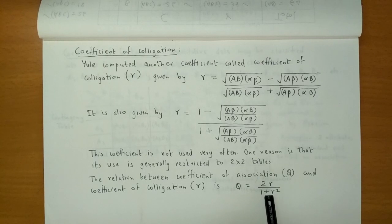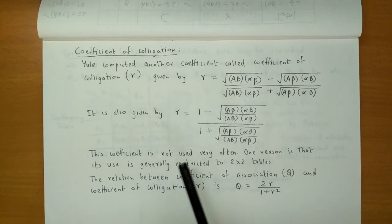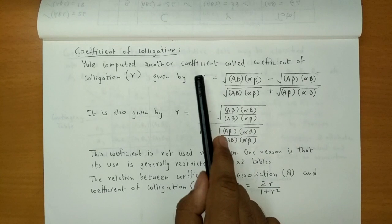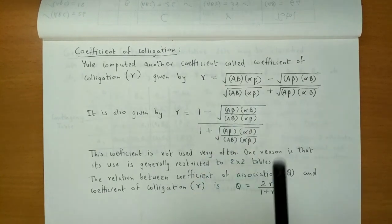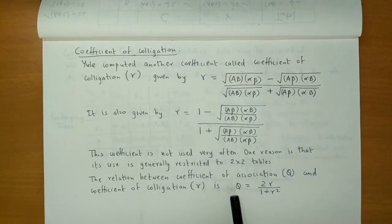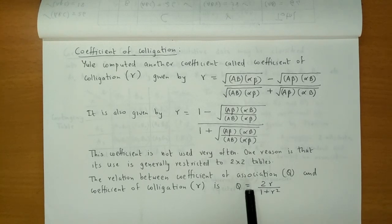The relation between the Coefficient of Association (Q) and the Coefficient of Colligation (Gamma) is given by the formula: Q equals 2 times Gamma upon 1 plus Gamma squared. So if you have the Coefficient of Colligation, you can also find the Coefficient of Association using this formula.